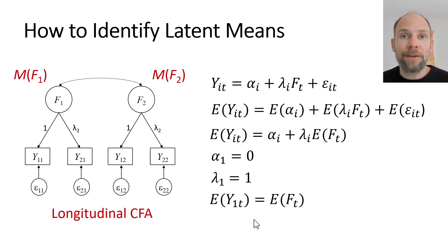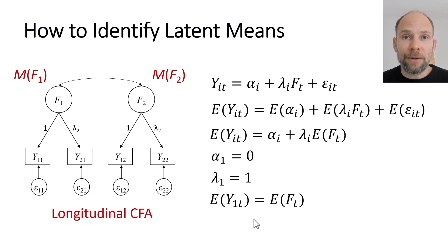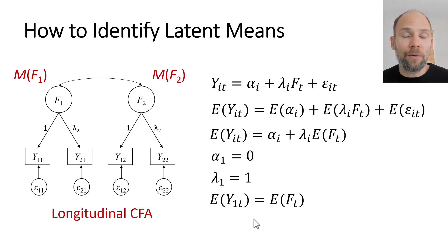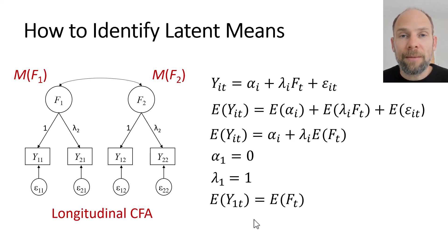The way I showed you here is not the only way to identify a mean structure in a factor model. For example, in multi-group analysis, we often use a different approach: we estimate all intercepts, set the loadings equal across groups except for a reference variable, and set the latent variable means to zero in a reference group, then estimate the means in the other groups. The estimated means in the other groups are then interpreted relative to the reference group. That is an equivalent way of identifying the mean structure, and there are other ways as well. I hope you found this video useful. Please consider subscribing to this channel, check out the description for additional resources, and I'll see you next time.